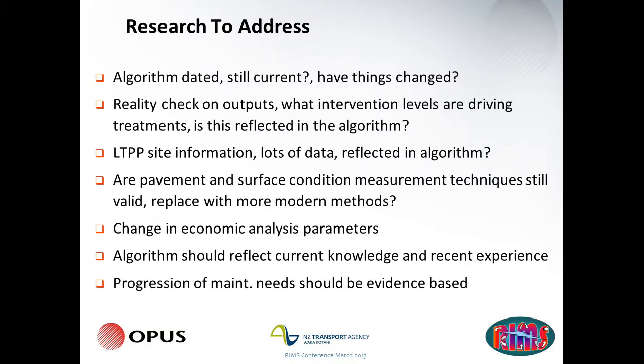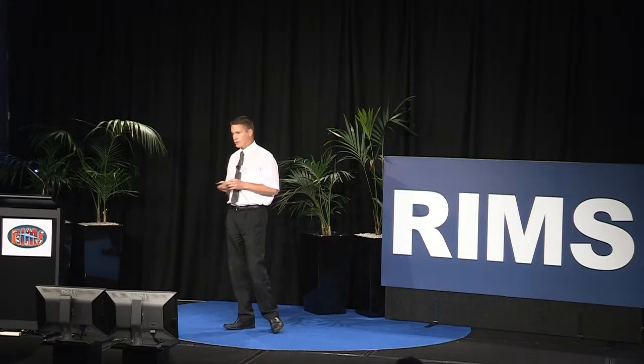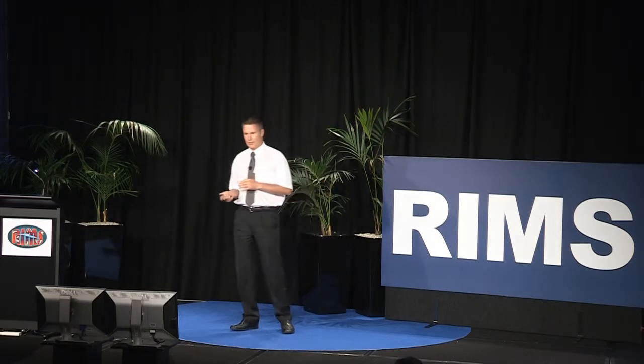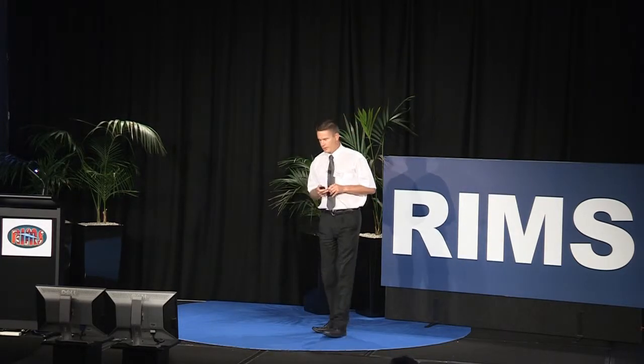So what's the research going to address? We know the algorithm is pretty dated — we're not saying it's not still current, but it is fairly old. Have things changed? What things have changed? Do we need to do a reality check on the outputs? What intervention levels are driving the treatments, and are those intervention levels still appropriate? If there are some new ones, how can we reflect that in the algorithm? There's also a lot of data and information that's come from our LTPP sites — can that be used, has it been used, or should we be integrating it in? Paul's just shown some new techniques — are there things we should be considering and updating in what we're doing?